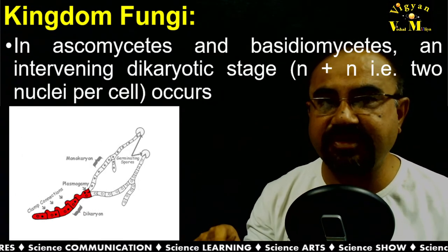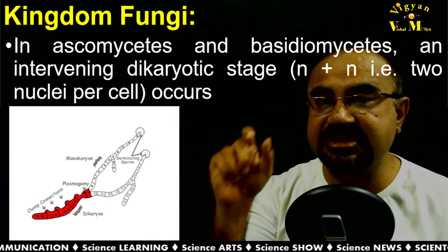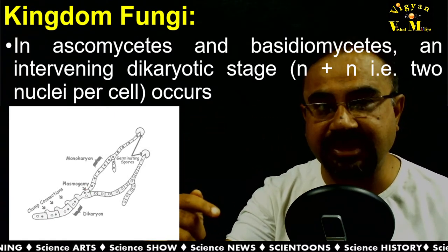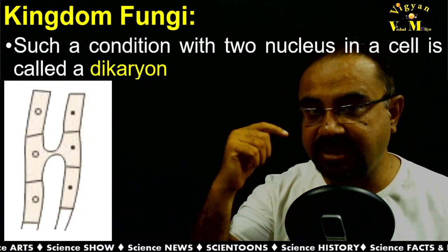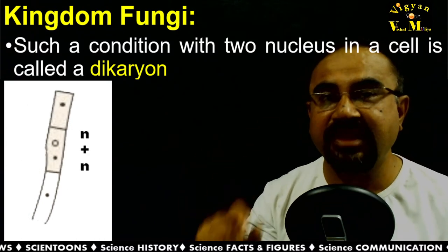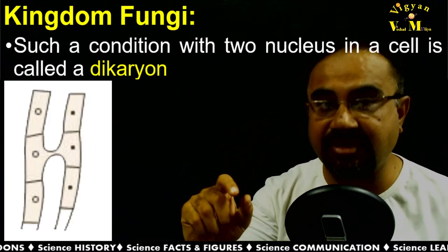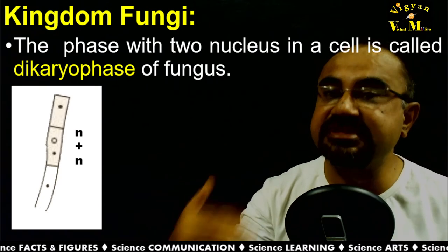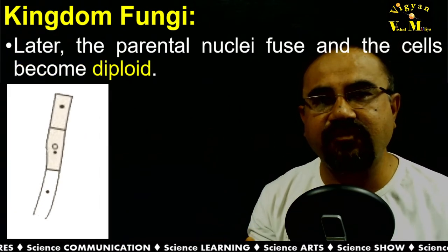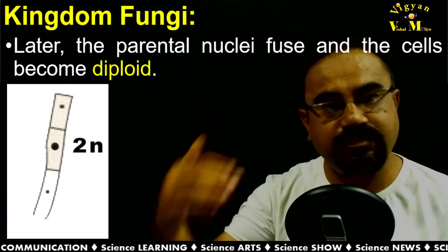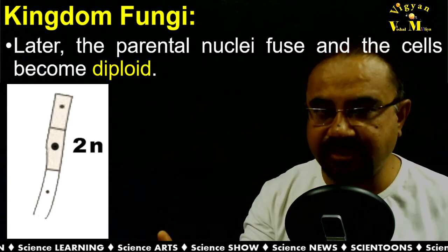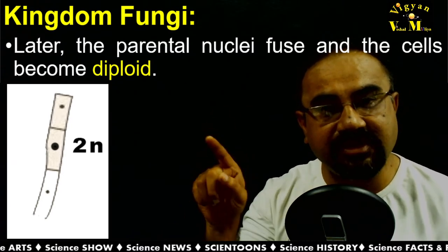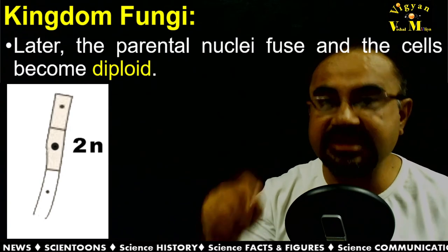In some fungi, fusion of haploid cells results immediately in a diploid cell, but this is not always the case. In Ascomycetes and Basidiomycetes, there is an intervening dikaryotic stage where two nuclei remain together without karyogamy. This condition — two nuclei present in one cell — is known as the dikaryon. The dikaryotic phase is n+n, and the diploid condition is 2n.